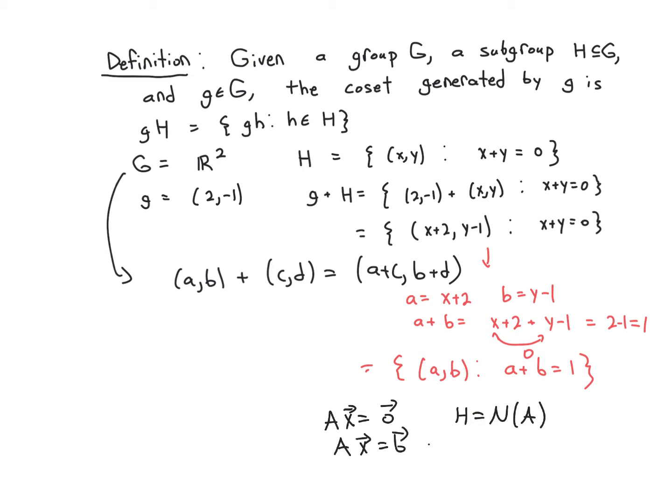and in general that defines a coset, usually of some form v plus h, where v is some vector that has the property that A times v equals b. In linear algebra, they call that the particular solution. And so the whole concept of coset is just generalizing this concept of particular solution to arbitrary groups.